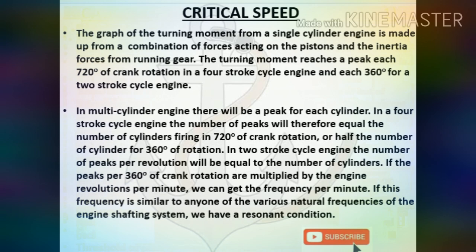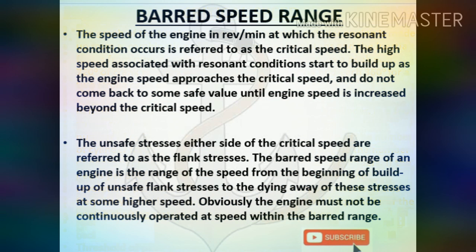Critical speed: the turning moment from a single cylinder engine is made up of forces acting on the pistons and inertia forces from running gear. It reaches a peak each 720 degrees of crank rotation in a four-stroke cycle engine and each 360 degrees for a two-stroke cycle engine. In a multi-cylinder engine there will be a peak for each cylinder. If the peaks per 360 degrees of crank rotation are multiplied by the engine RPM we get the frequency per minute. If this frequency matches any one of the natural frequencies of the engine shafting system, we have a resonant condition.